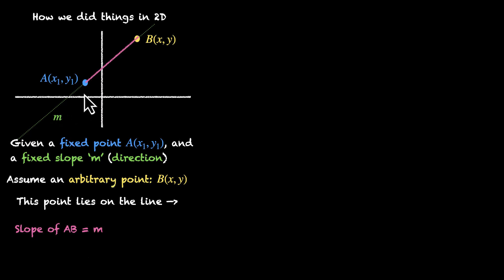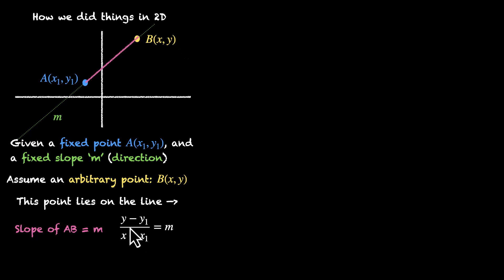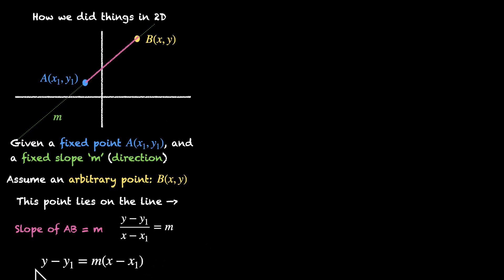We find the slope using (y2 - y1) / (x2 - x1). Here y2 is y and x2 is x, so y minus y1 divided by x minus x1 equals M. This gives us the equation of the line. If we rearrange it, we get y minus y1 equals M times x minus x1. So this is what we used to do in 2D.